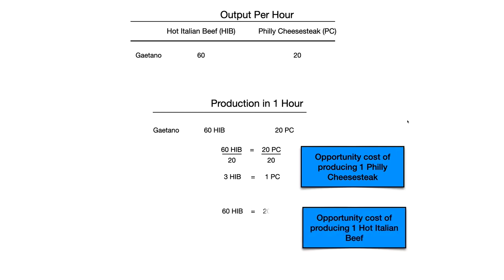We can do the same for the opportunity cost of producing one hot Italian beef sandwich. In one hour he can produce 60 hot Italian beef sandwiches, and during that same time period he could have produced 20 Philly cheesesteak sandwiches. We divide both sides by 60 because we want to get the equivalent amount of Philly cheesesteaks that could have been produced in the time it takes to produce one hot Italian beef. So one hot Italian beef sandwich equals 0.333 Philly cheesesteak sandwiches — in other words, one-third of a Philly cheesesteak sandwich.